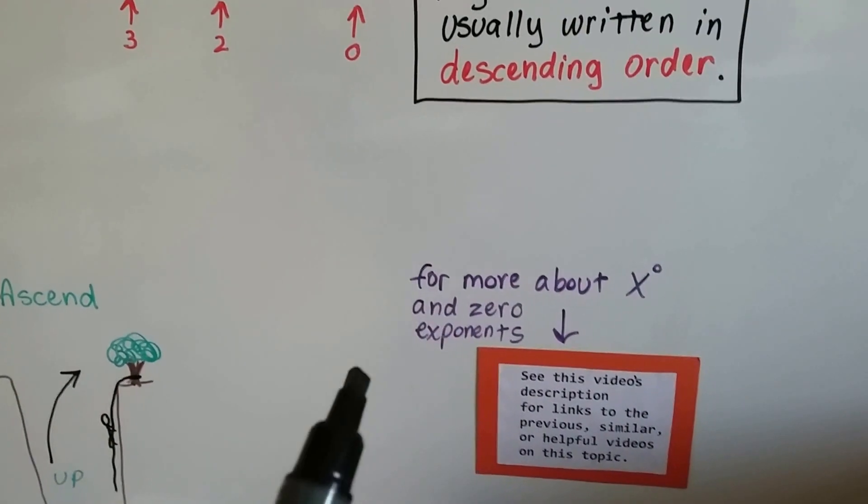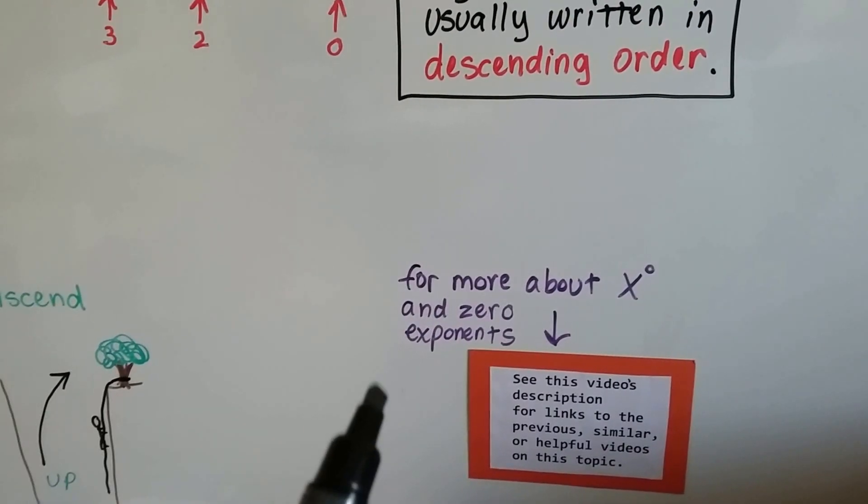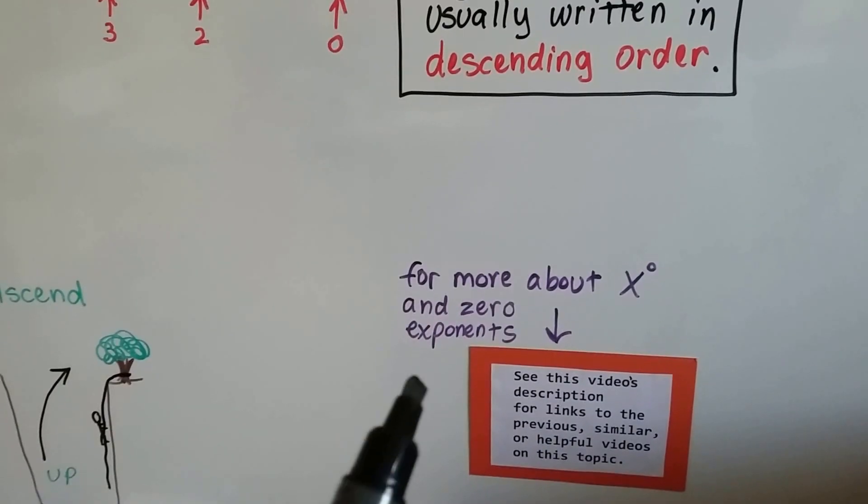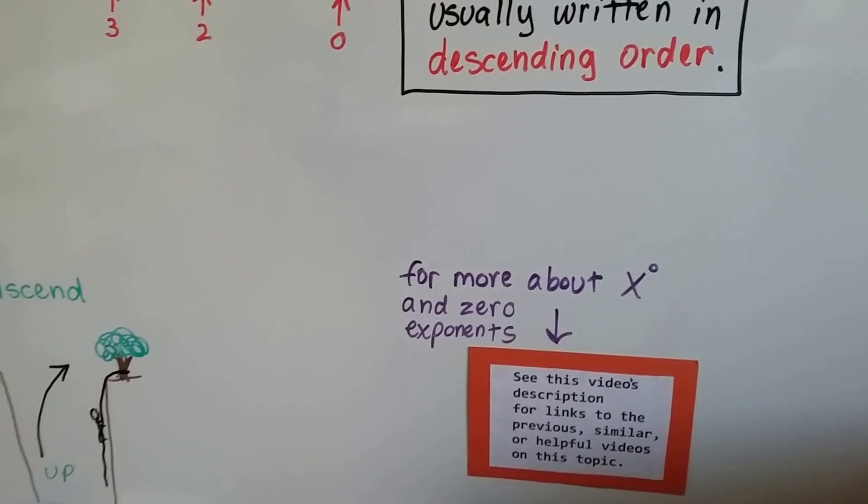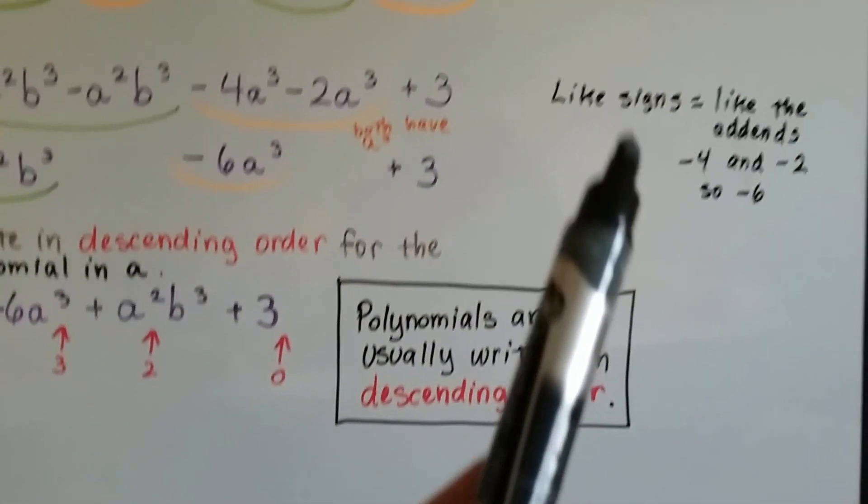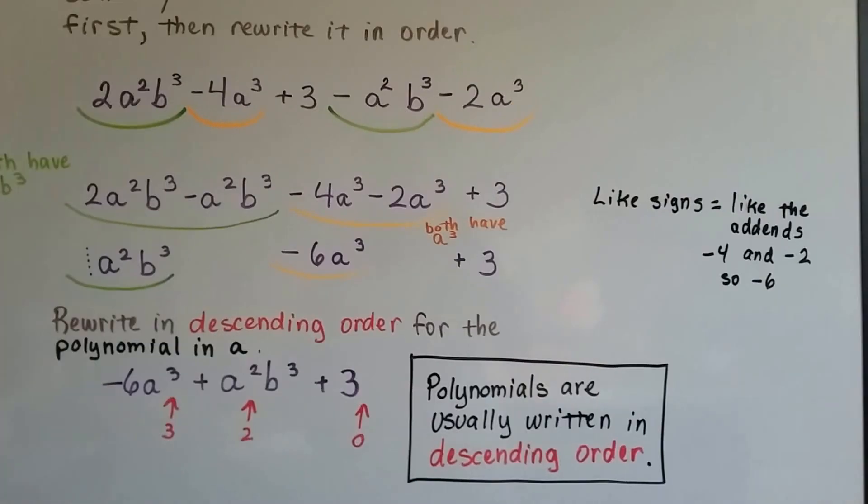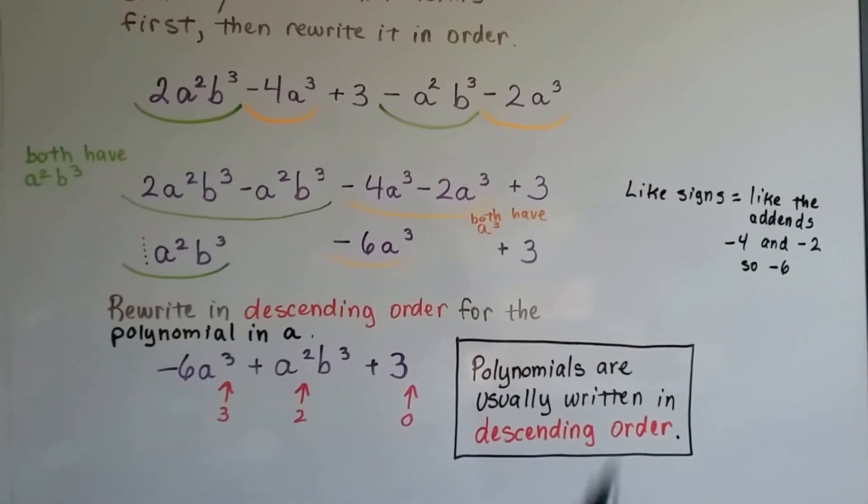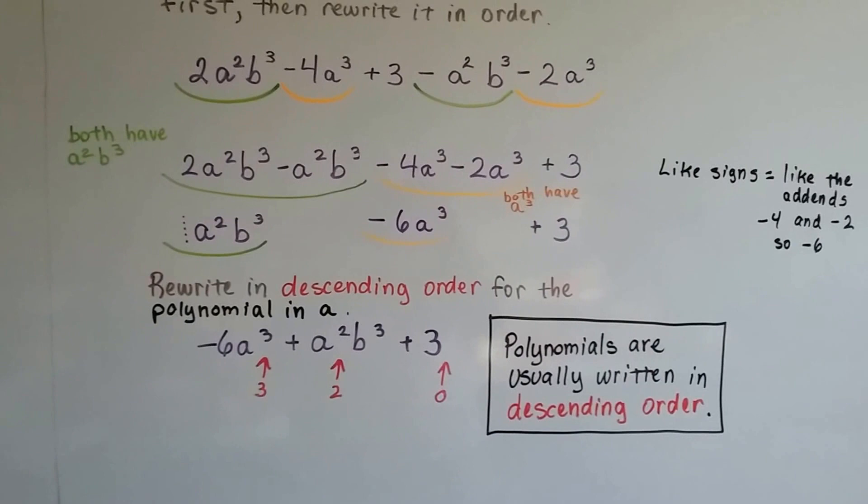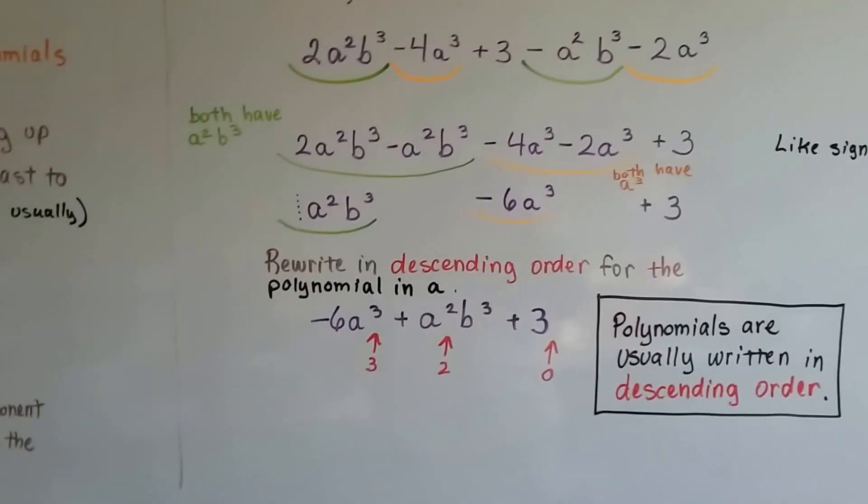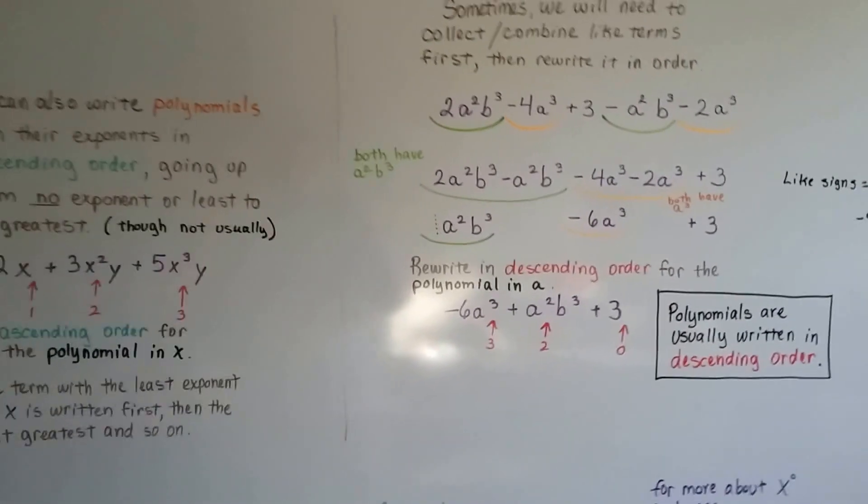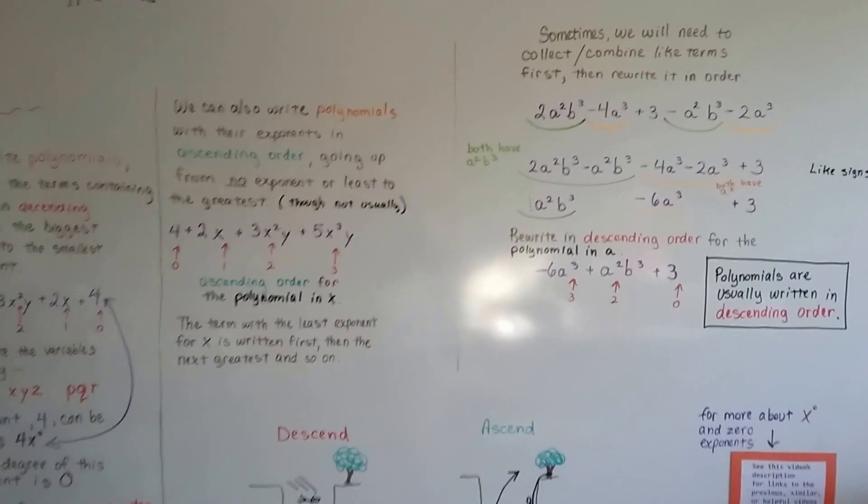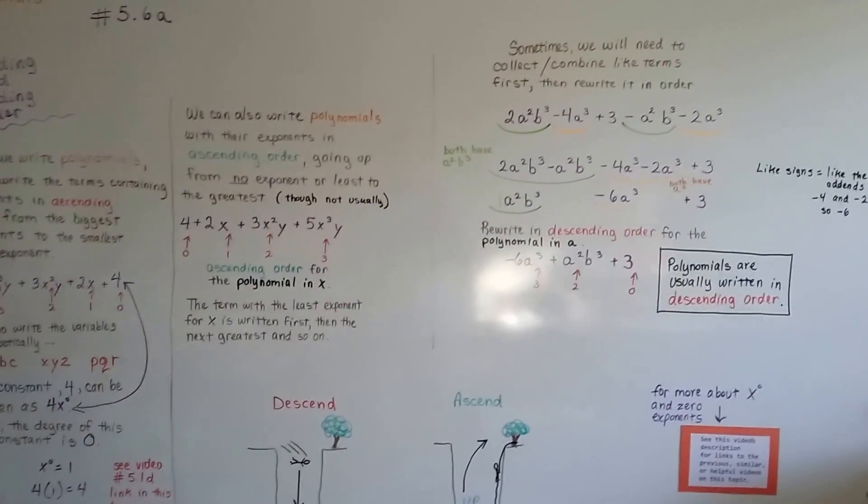So remember, more for about any 0 exponents, like x to the 0 power, look in this video's description for the link, and I'll have a link to the 8th grade math video that talks about like and unlike signs. Might be a couple videos for that. So it's really important that you remember that they're usually written in descending order,